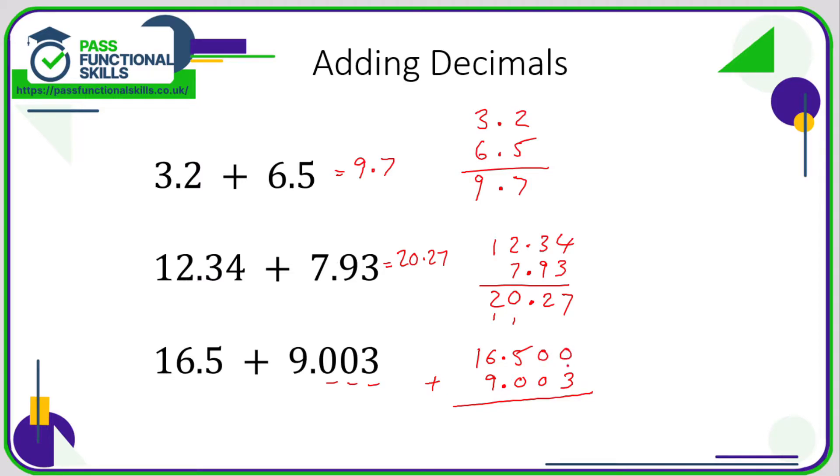Put the decimal point in at the start. 0 plus 3 or nothing plus 3 is 3, 0 plus 0 is 0, 5 plus 0 is 5, 6 plus 9 is 15, write 5 carry the 1, 1 plus 1 is 2. So there's our answer: 25.503. The key thing is make sure you line them up correctly by keeping the decimal points in line.